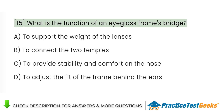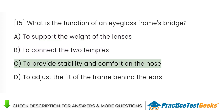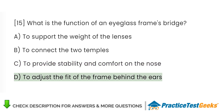What is the function of an eyeglass frame's bridge? A. To support the weight of the lenses. B. To connect the two temples. C. To provide stability and comfort on the nose. D. To adjust the fit of the frame behind the ears.